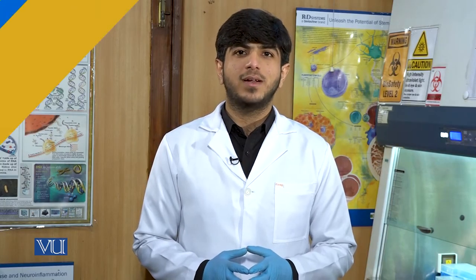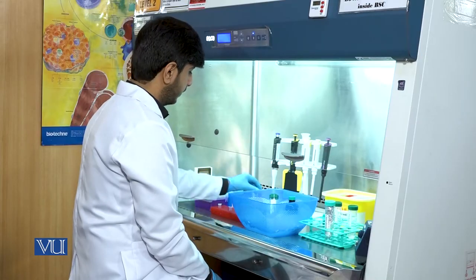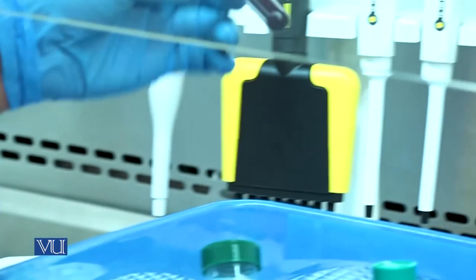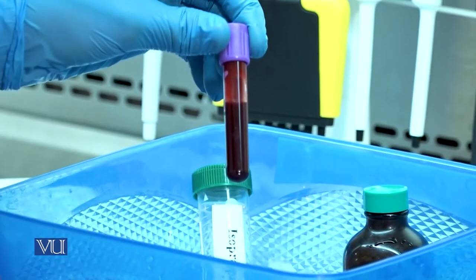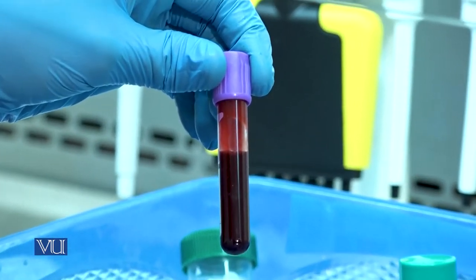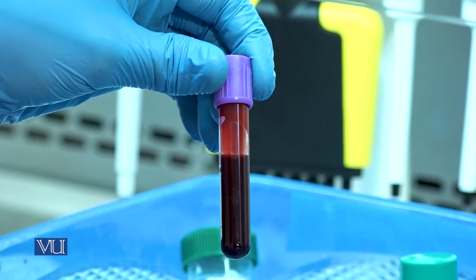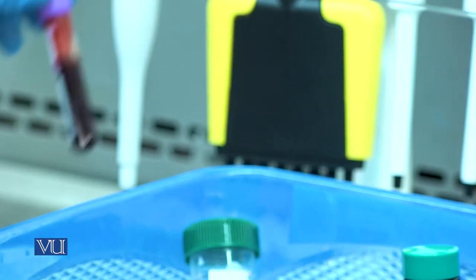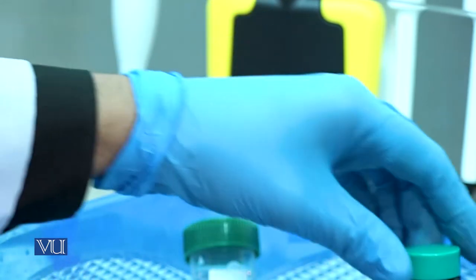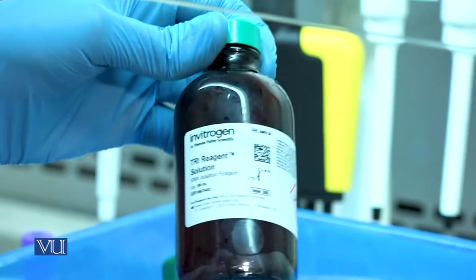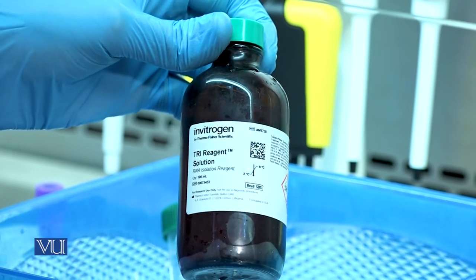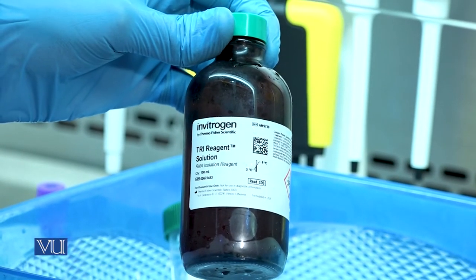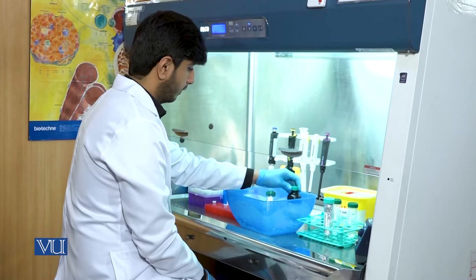Let's perform the experiment. The major reagents and materials required for RNA extraction are blood and trizol reagent. Trizol reagent is a light-sensitive chemical and it preserves the integrity of RNA.